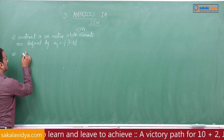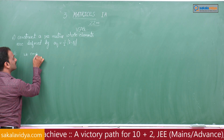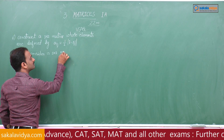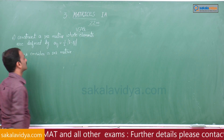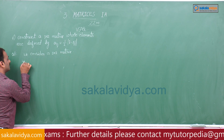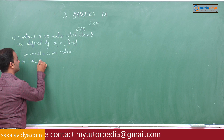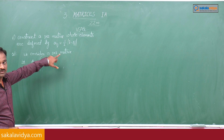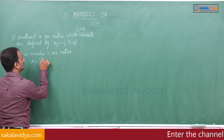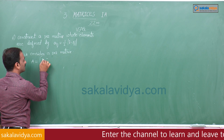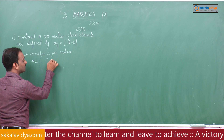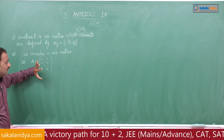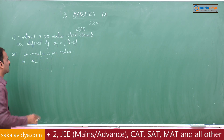For a 3 cross 2 matrix, it must contain 3 rows and 2 columns. We represent the elements in the form of aij, where the position of each element corresponds to its row and column location in the matrix.